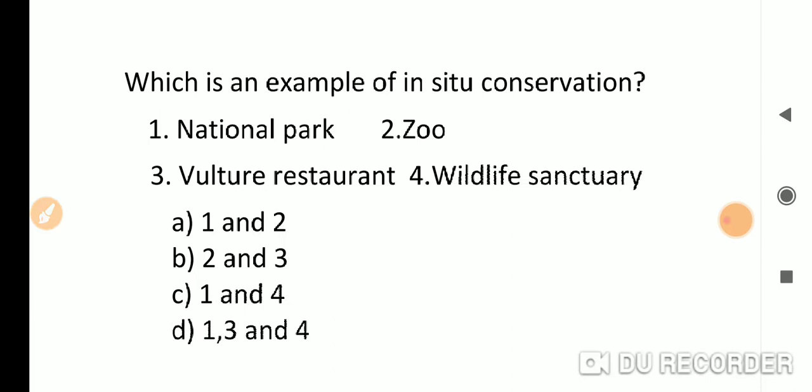Which is an example of in-situ conservation? National park is correct, wildlife sanctuary is also correct, vulture restaurants where vultures are provided meat are also correct, but zoo is ex-situ. So the correct answer will be one, three, four, option B.